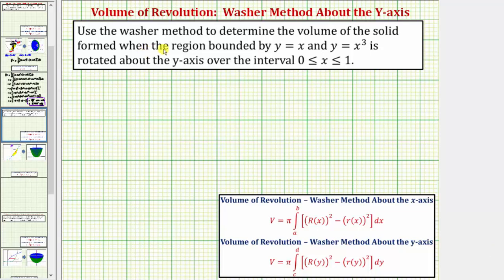We want to use the washer method to determine the volume of the solid formed when the region bounded by y equals x and y equals x cubed is rotated about the y-axis over the interval where x is greater than or equal to zero and less than or equal to one.